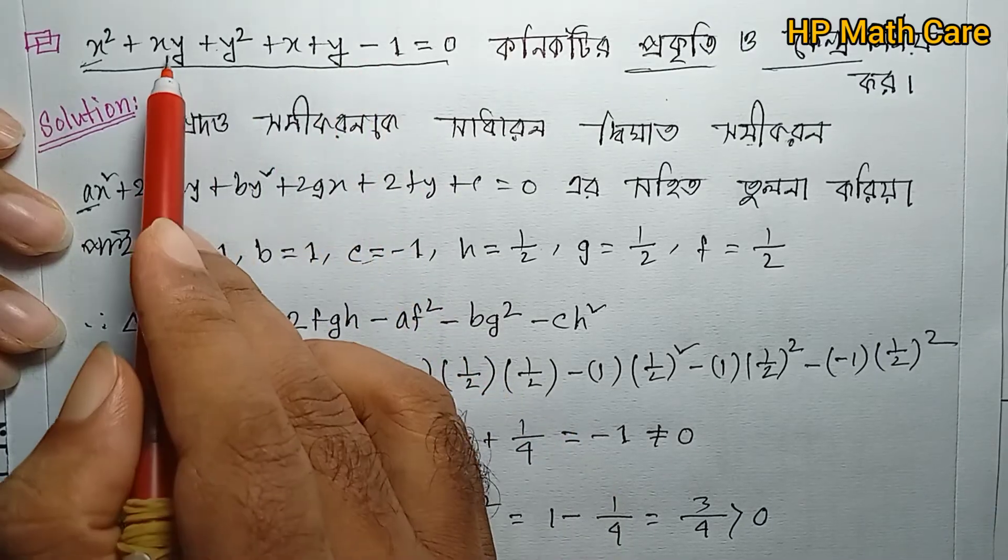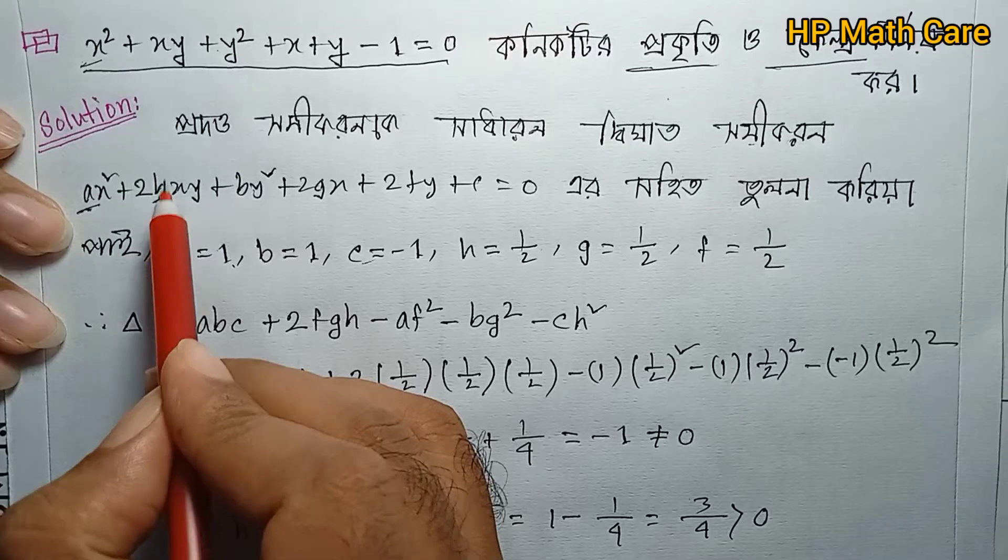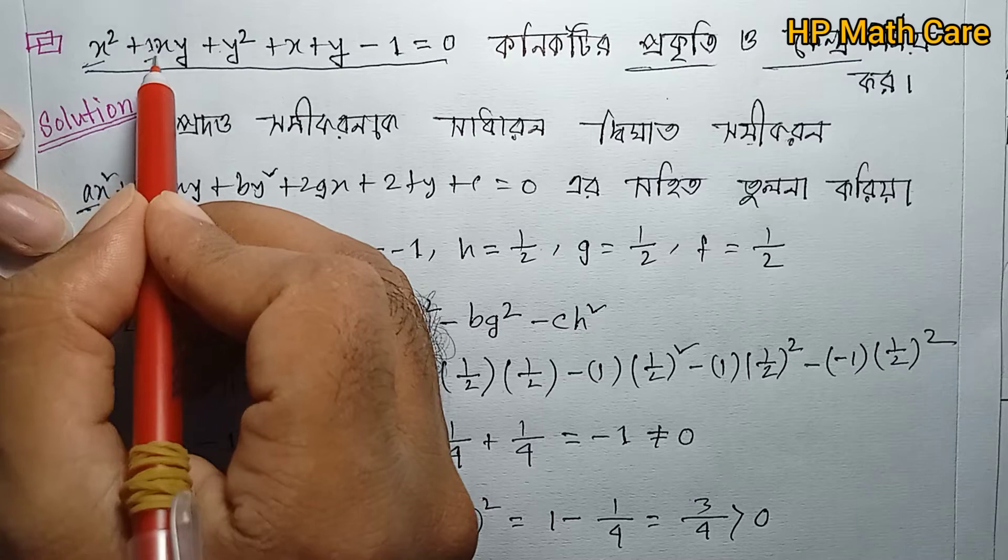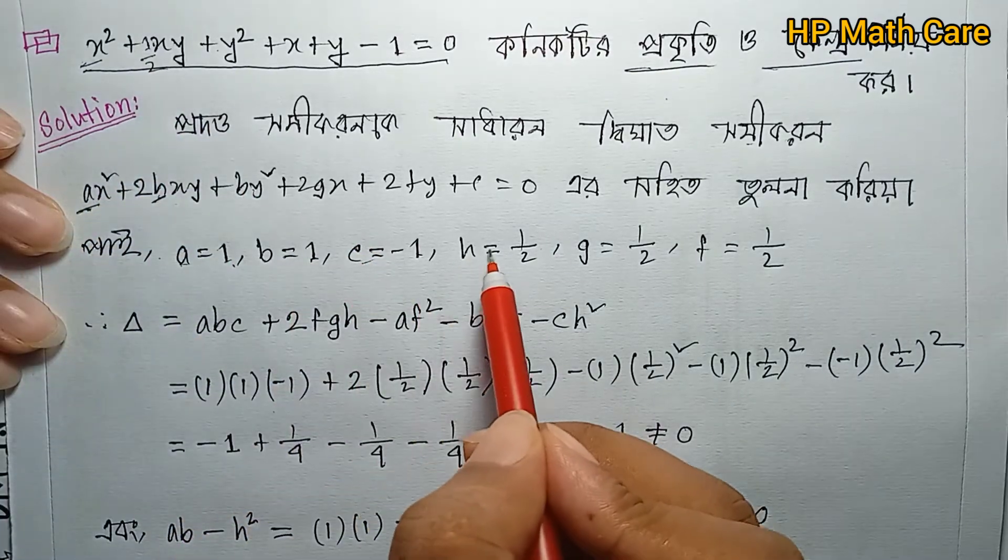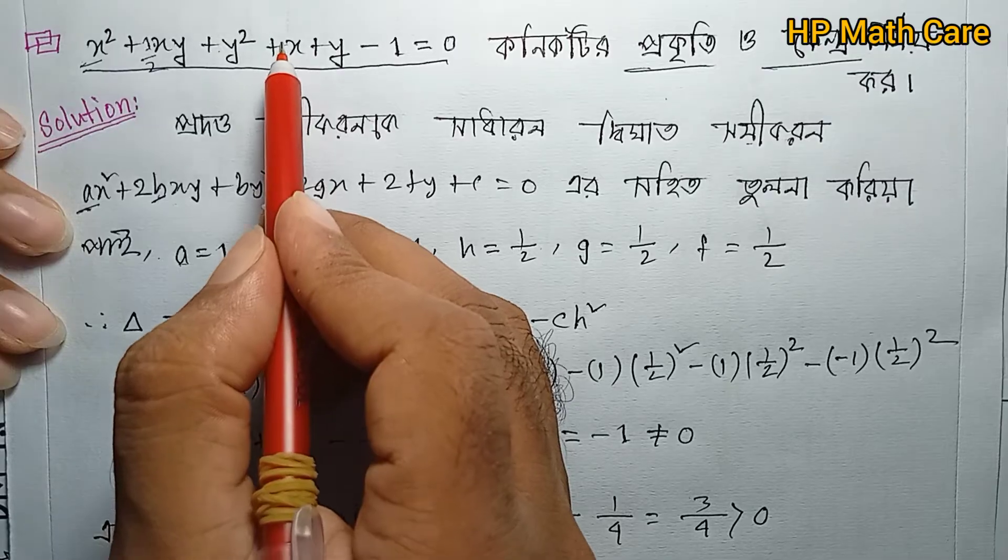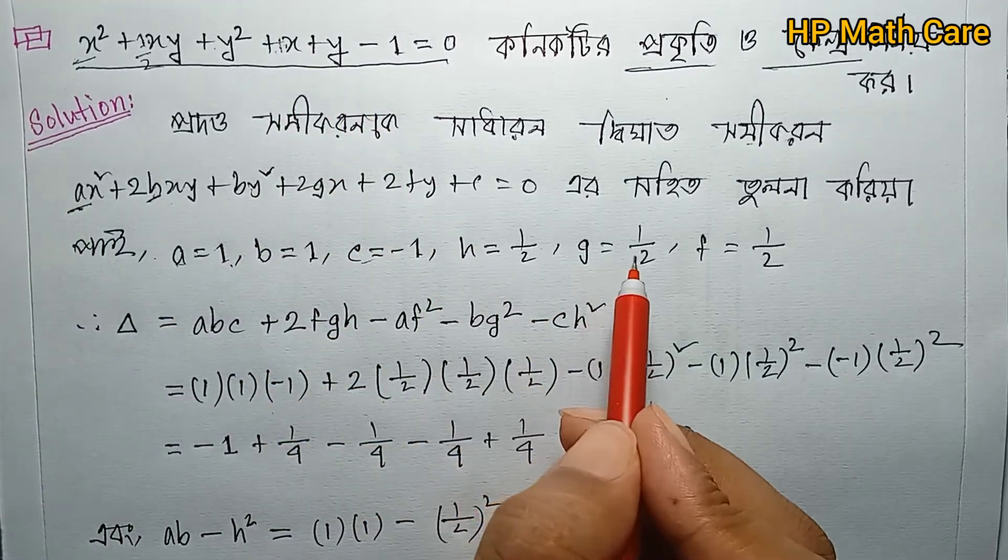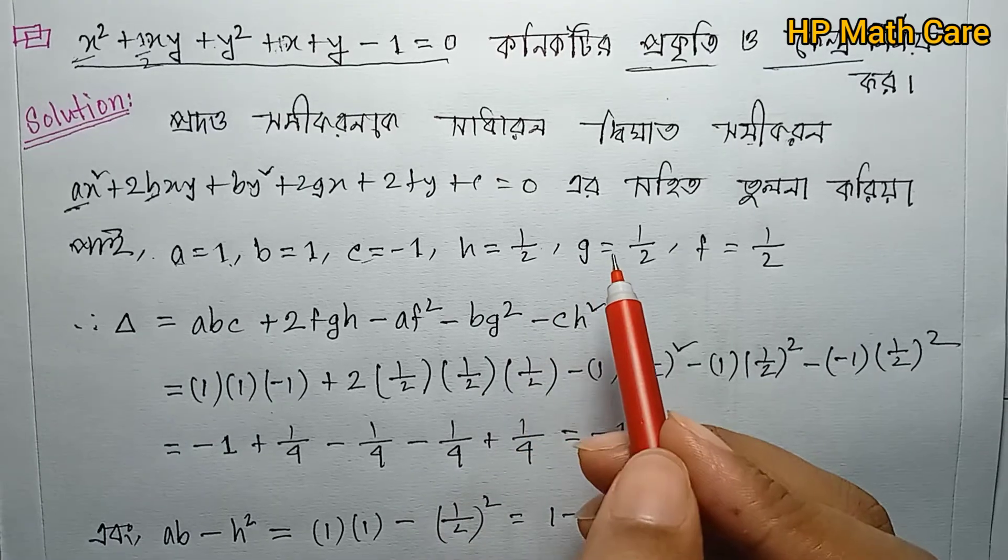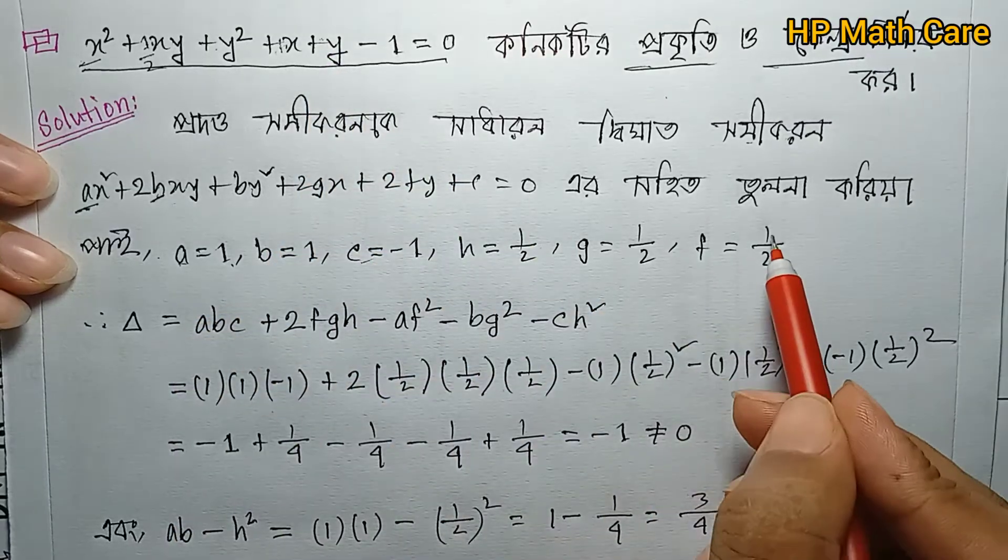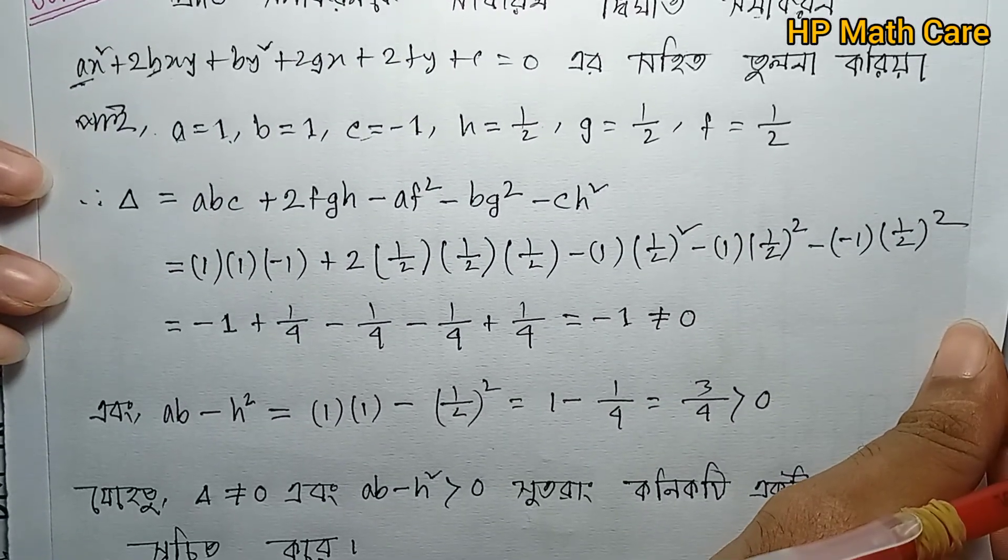Comparing with the general equation ax² + 2hxy + by² + 2gx + 2fy + c = 0: a = 1, 2h = 1 so h = 1/2, b = 1, 2g = 1 so g = 1/2, 2f = 1 so f = 1/2, c = -1.